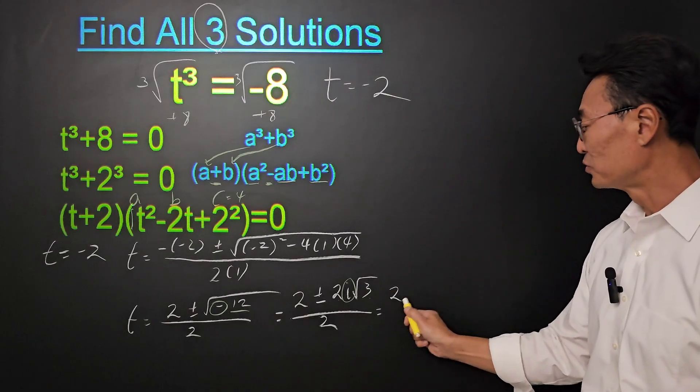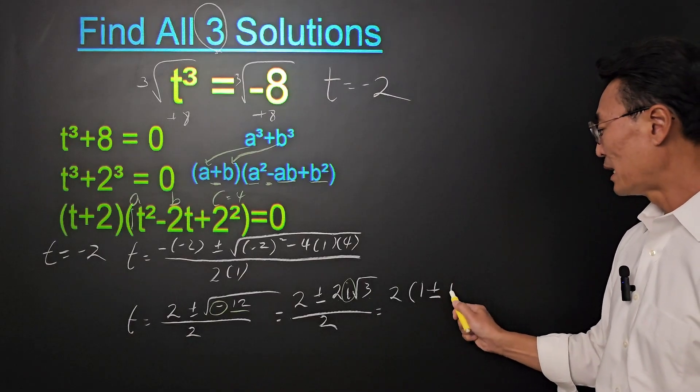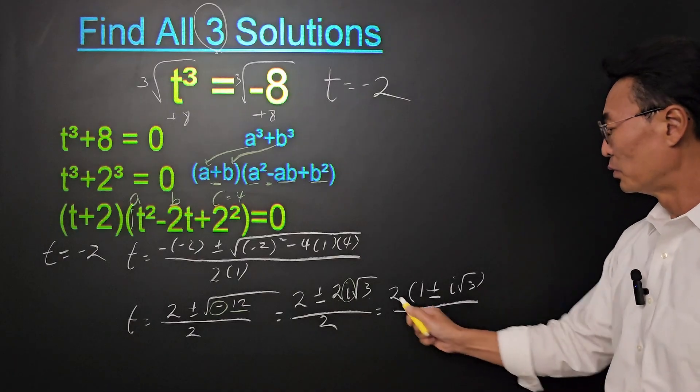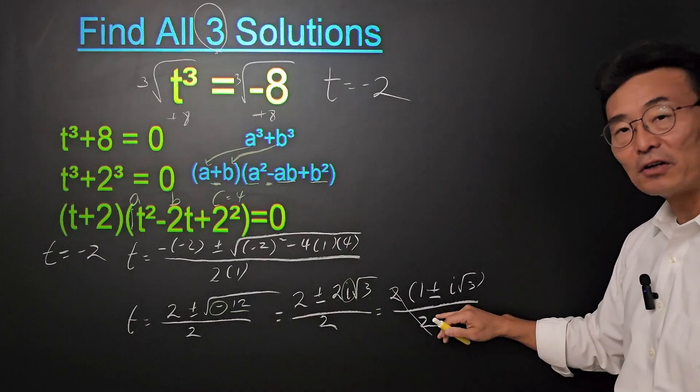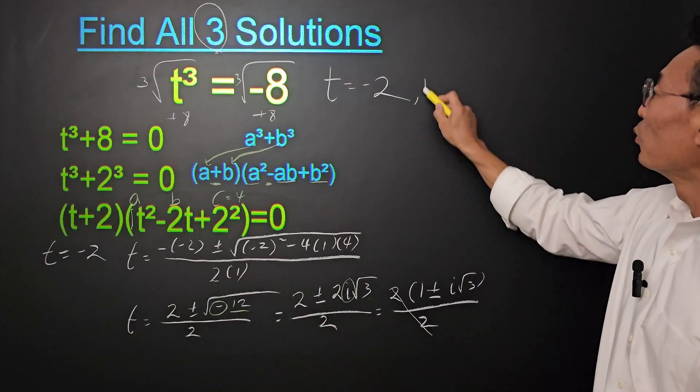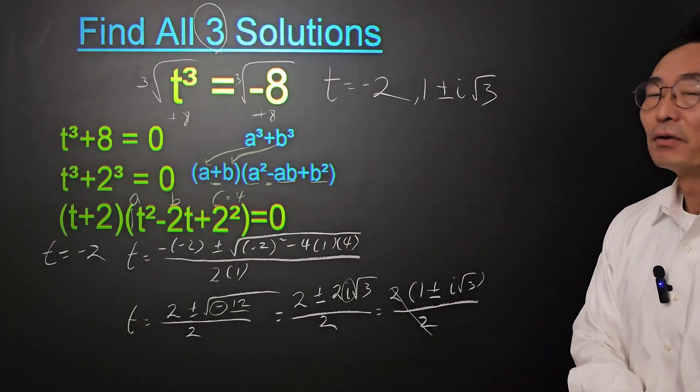Let's continue. We're going to factor the 2 out to the front, making it 1 plus minus i root 3, all over 2, where the 2's cancel out, and here's our other 2 solutions, which will be 1 plus minus i root 3.